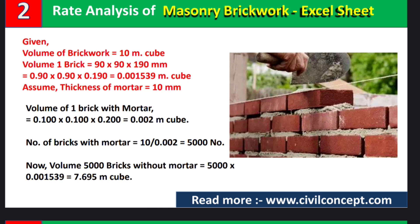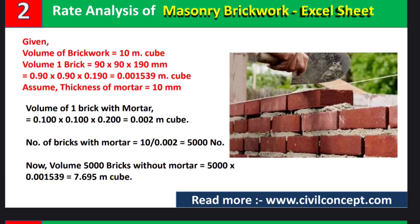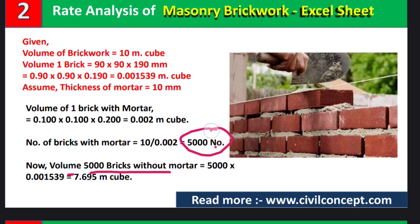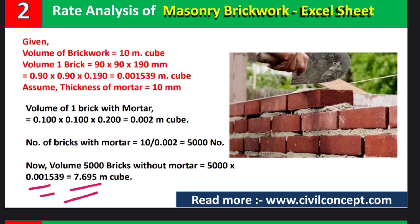To calculate the number of bricks with mortar, divide the total quantity of brick work by the volume of one brick with mortar. After calculating, we get 5000 number of bricks. The volume of 5000 bricks without mortar is 5000 multiplied by the volume of one brick (0.001539), which gives 7.695 cubic meters.